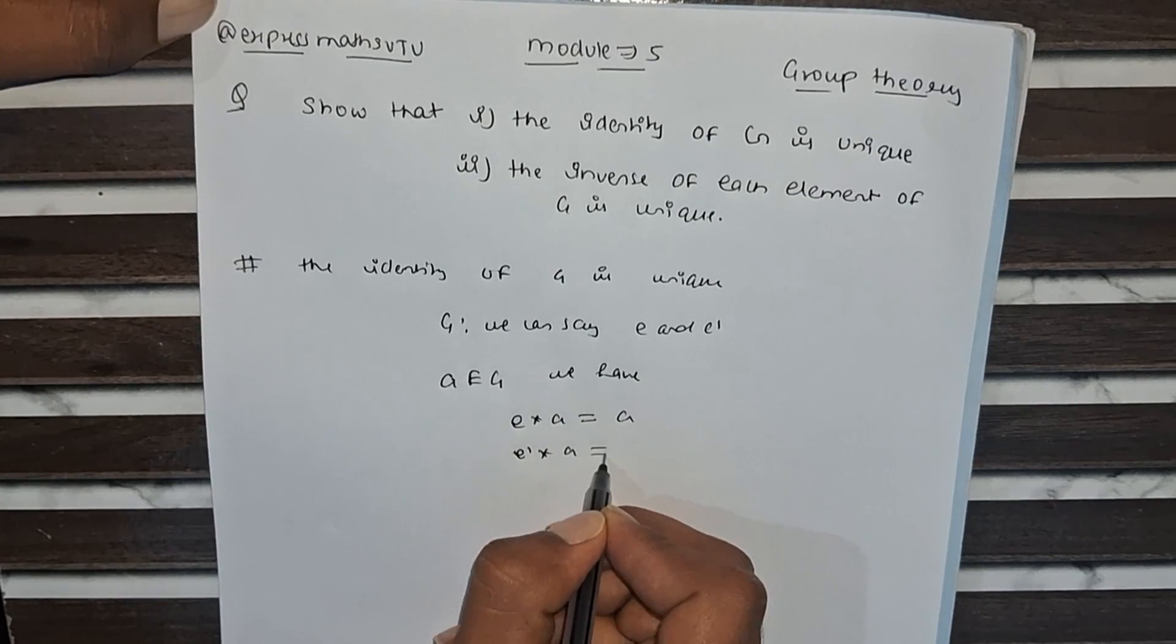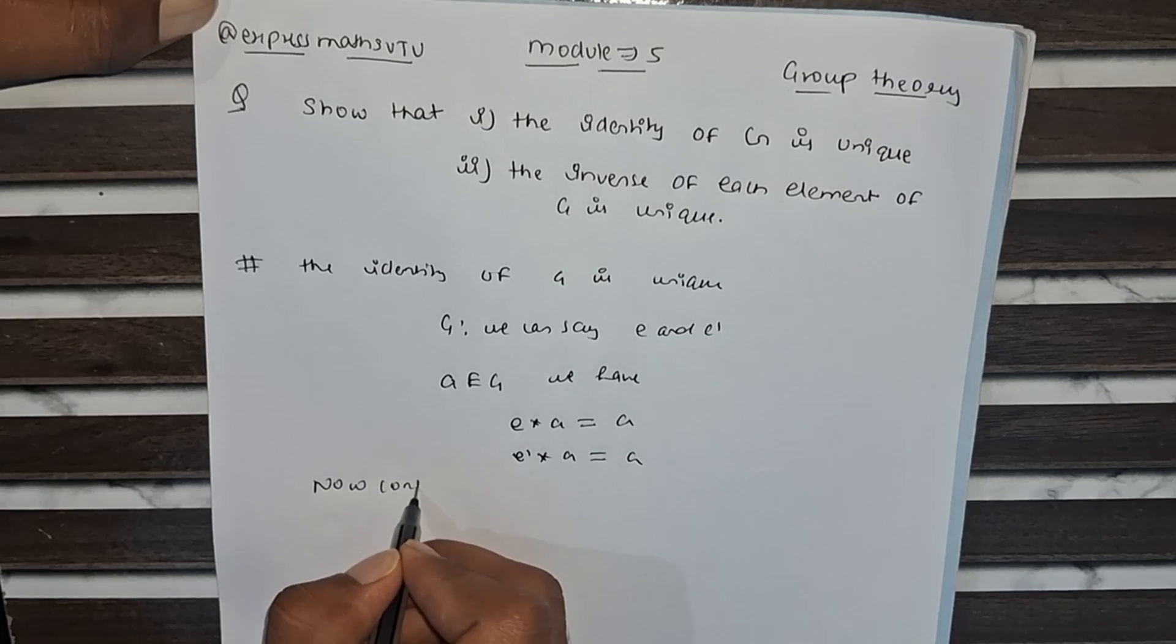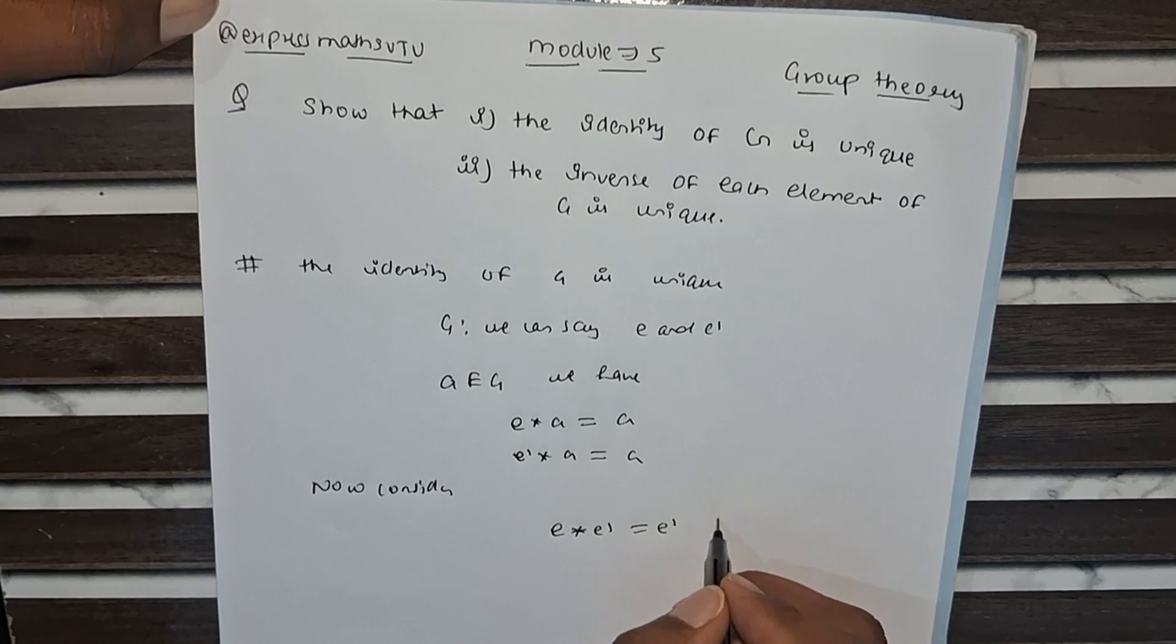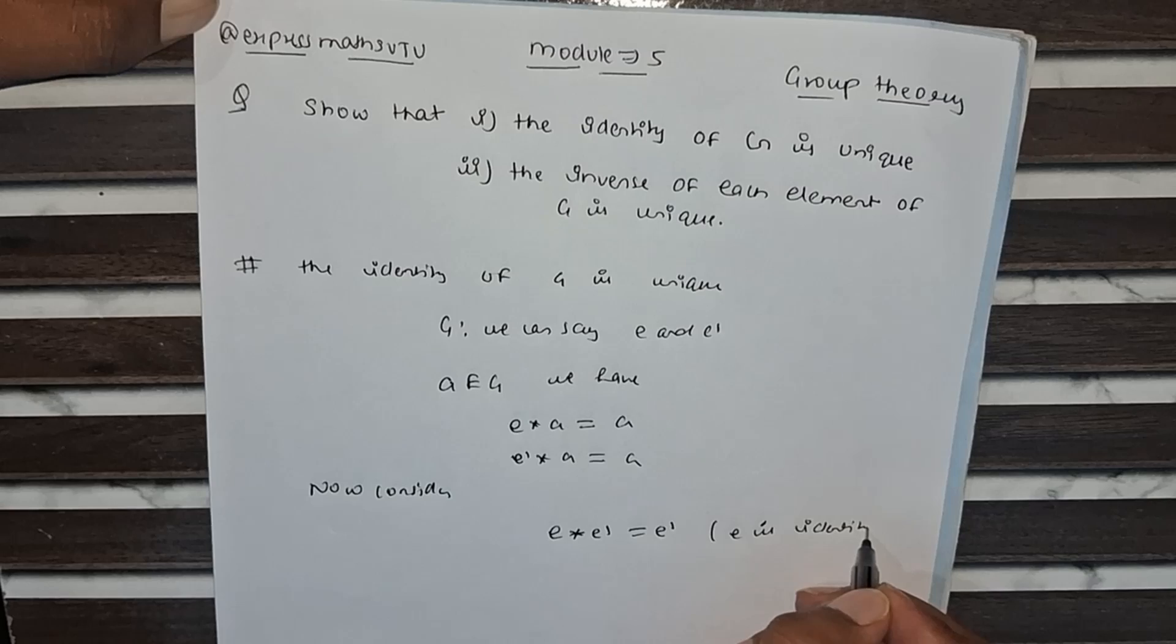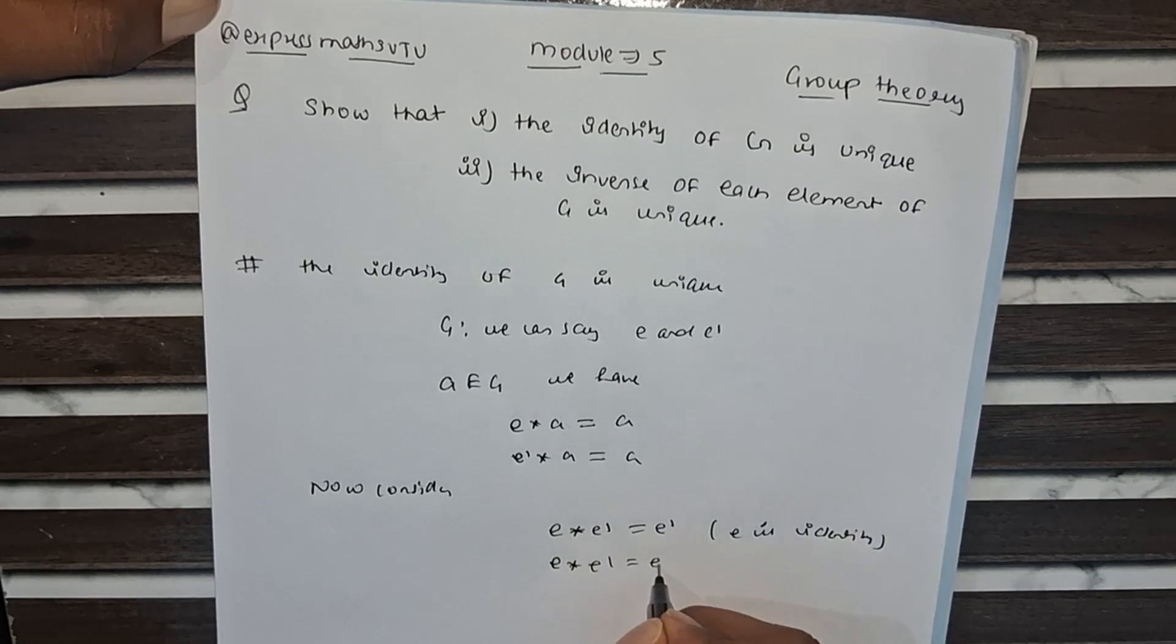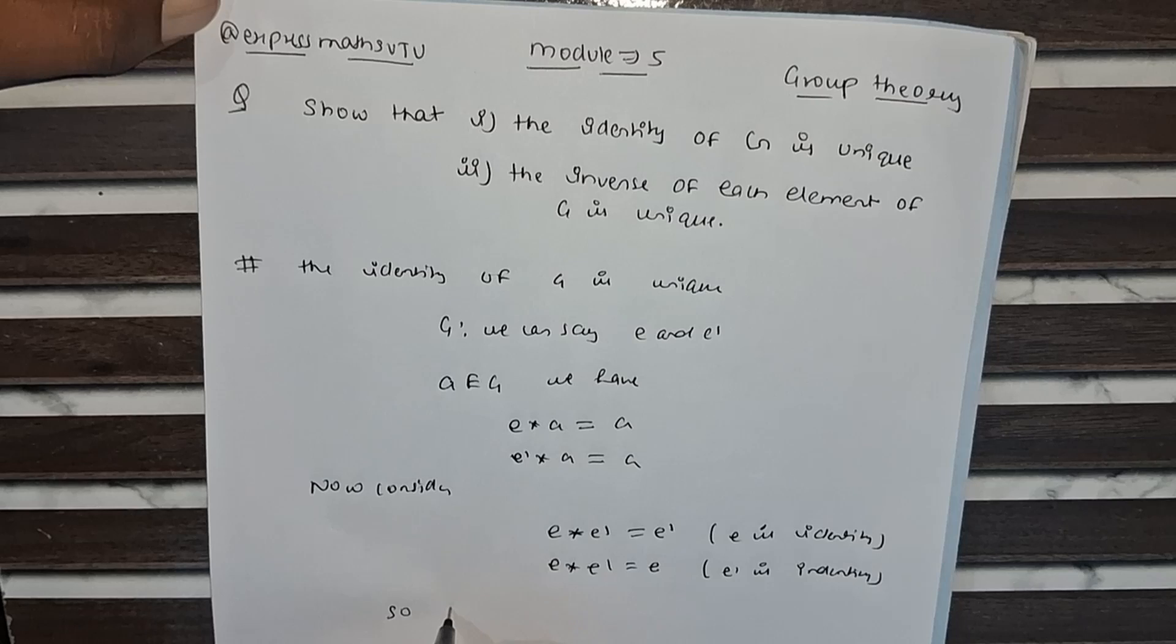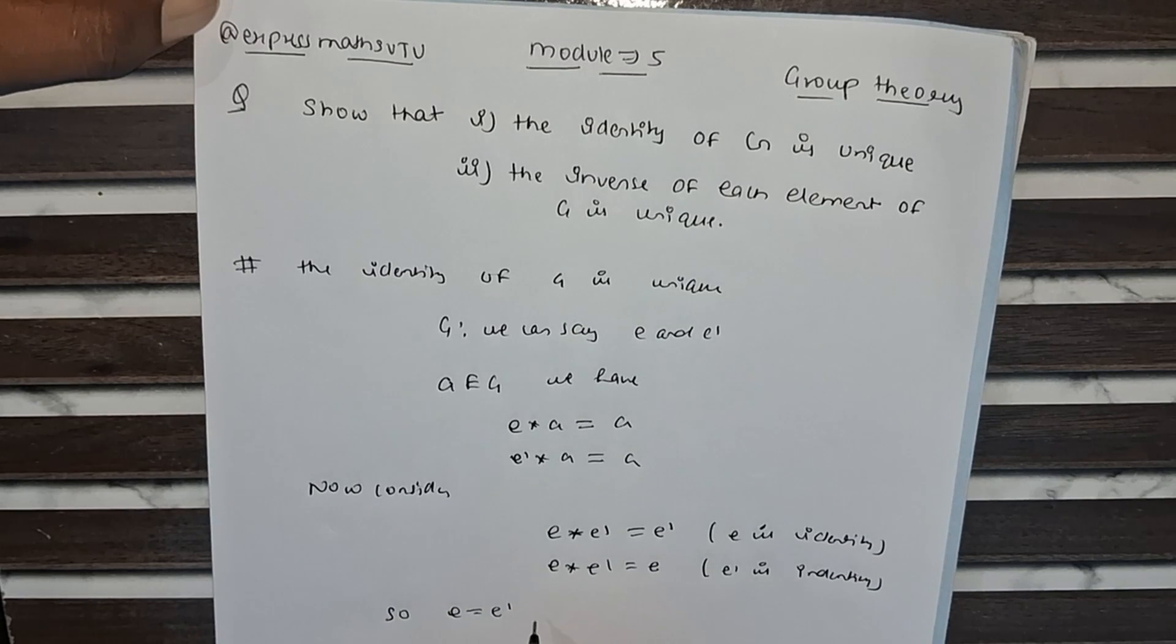Now consider E times E' equals E' (where E is identity), and E' times E equals E (where E' is identity). You can clearly see that E equals E', hence the identity element is unique.